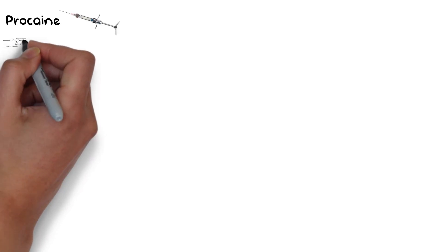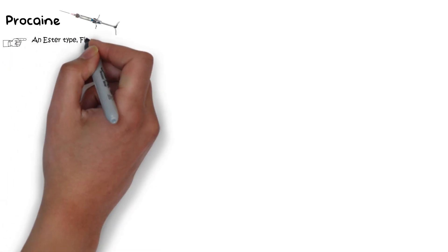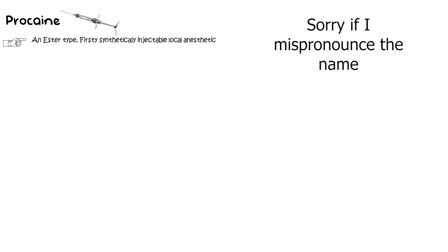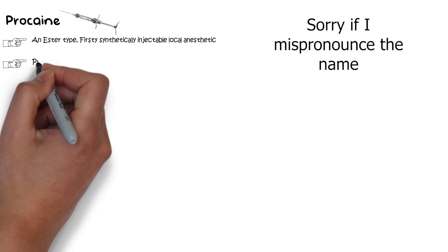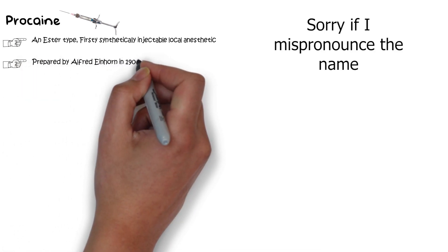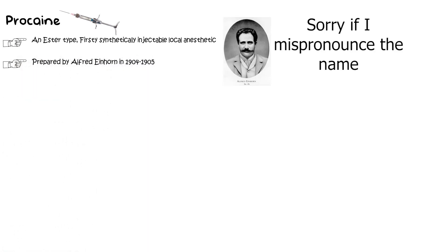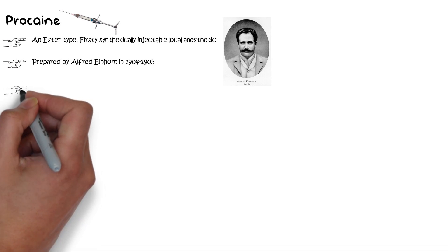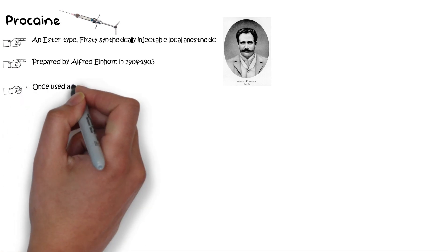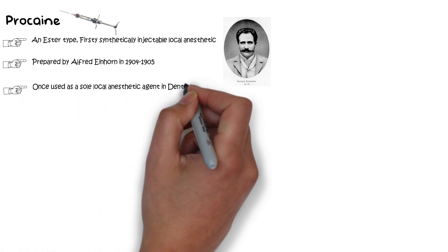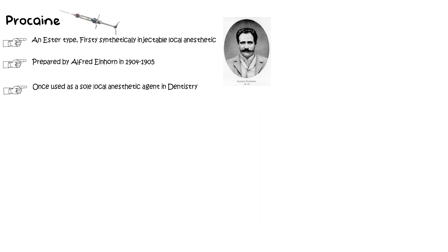Procaine is an ester type local anesthetic which was also the first synthetically injectable local anesthetic. It was prepared by Alfred Einhorn in 1904 to 1905. Procaine was once used as a sole local anesthetic agent for pain control in dentistry, and its proprietary name Novocaine is well known throughout the world.